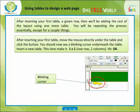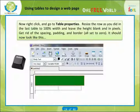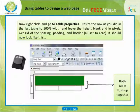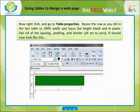You should now see a blinking cursor underneath the table. Insert a new table — this time make it one by two: one row, two columns. Hit OK. Your new table should show up. Move your mouse between the two tables and left click. Now hit Delete on your keyboard — this should make the two tables flush up against each other. Right click and go to table properties. Set the row width to 100 percent width and leave the height blank in pixels. Get rid of the spacing, padding and border — set them to zero.